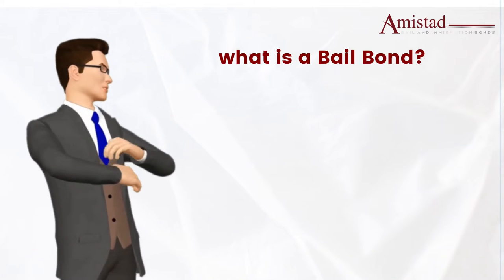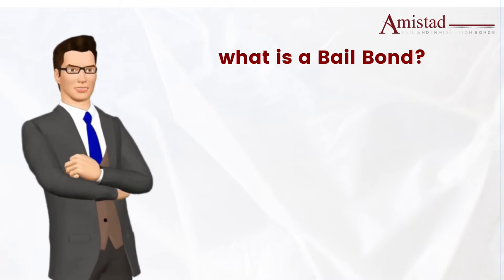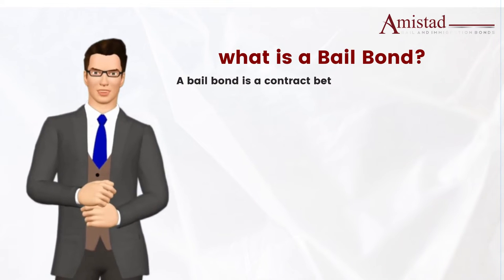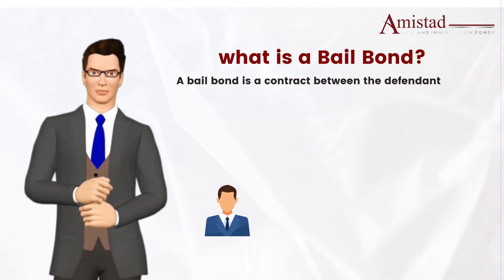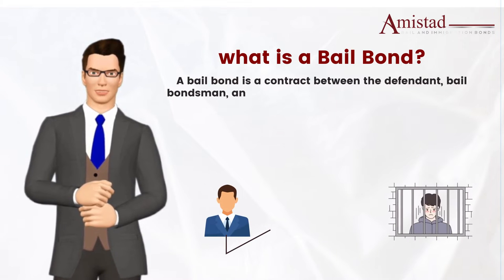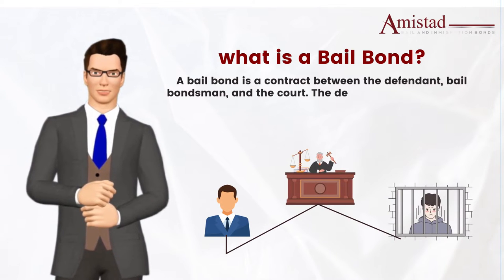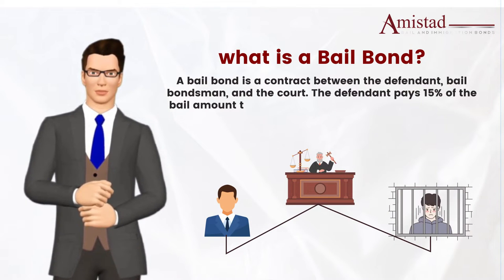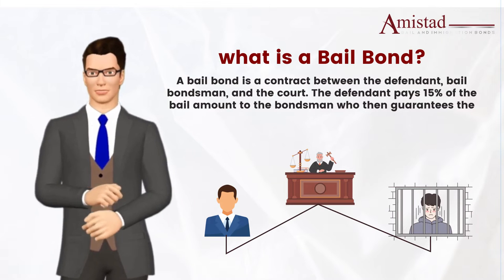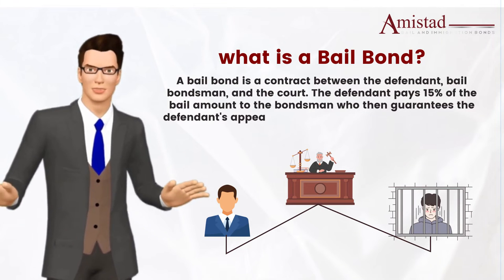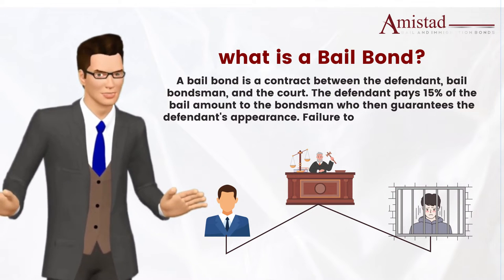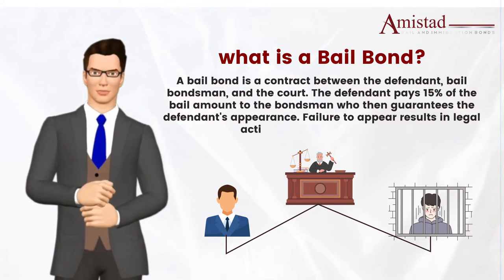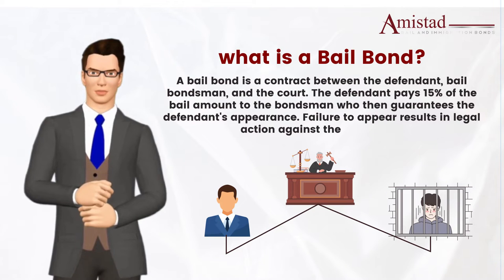But first, what is a bail bond? A bail bond is a contract between the defendant, bail bondsman, and the court. The defendant pays 15% of the bail amount to the bondsman, who then guarantees the defendant's appearance. Failure to appear results in legal action against the defendant.